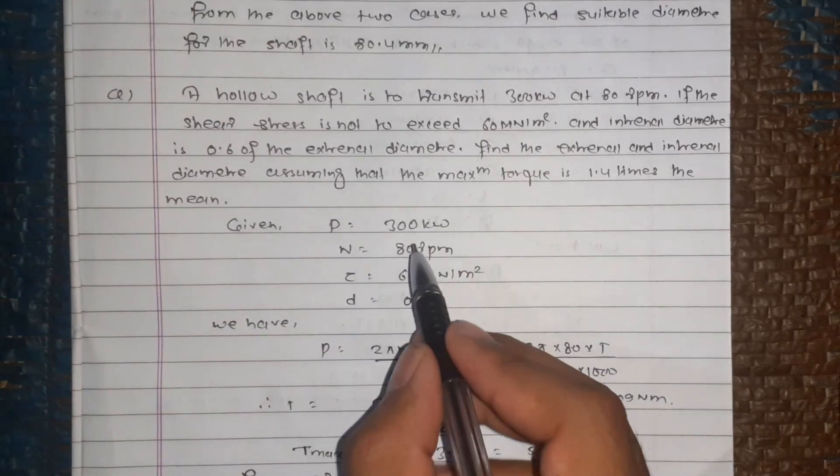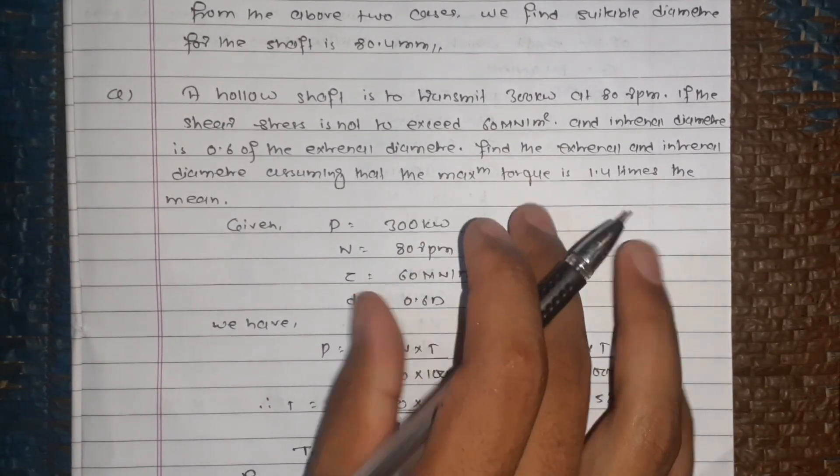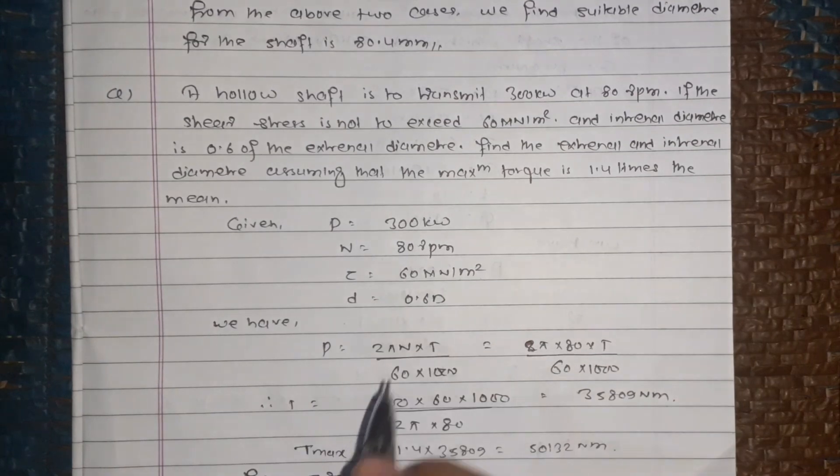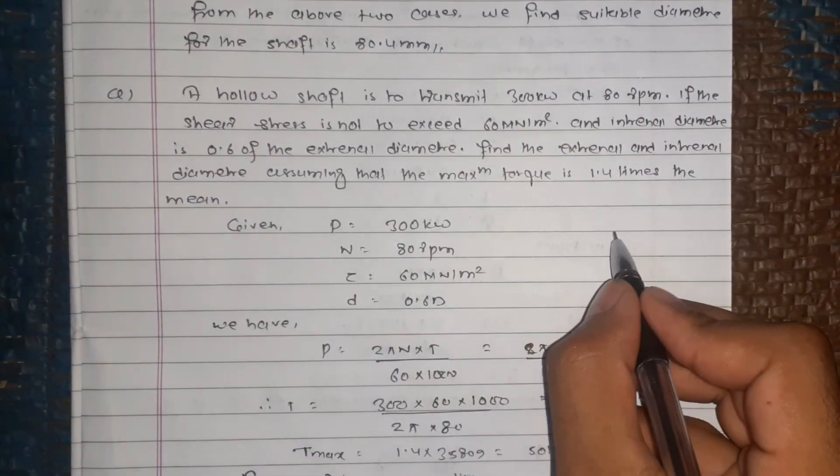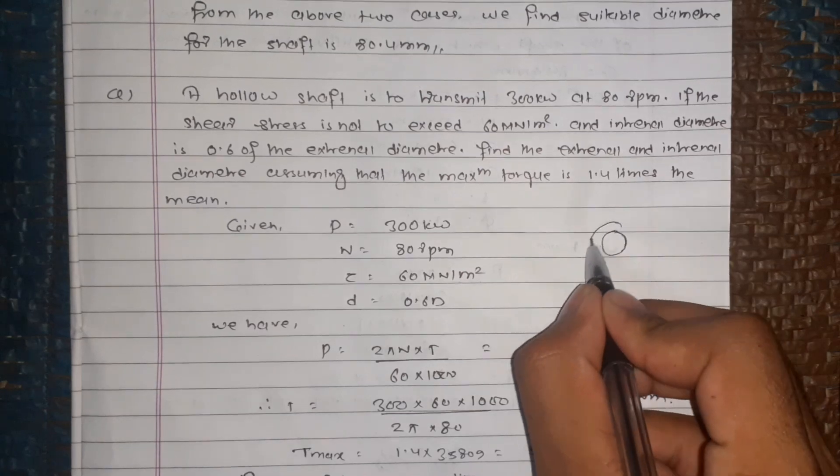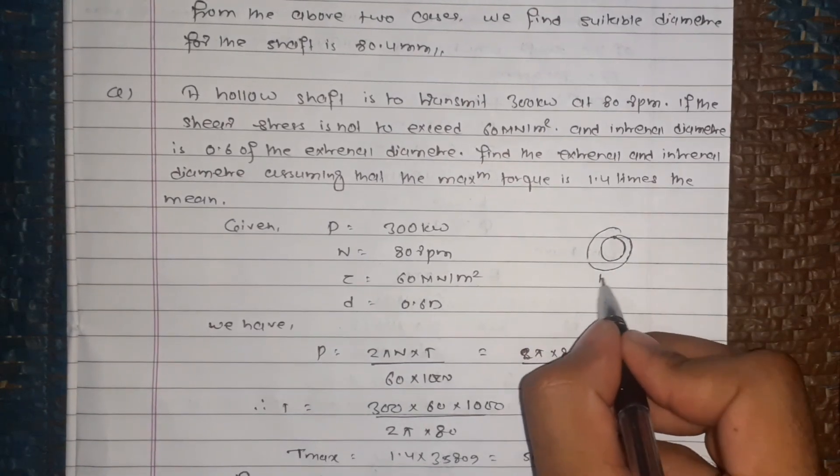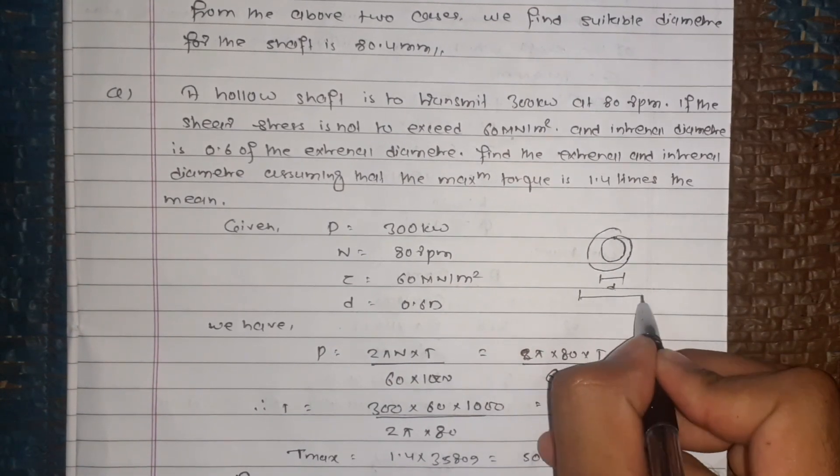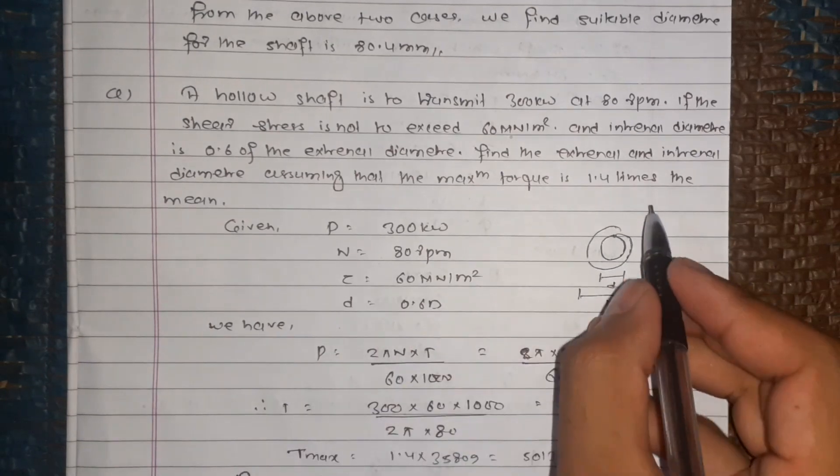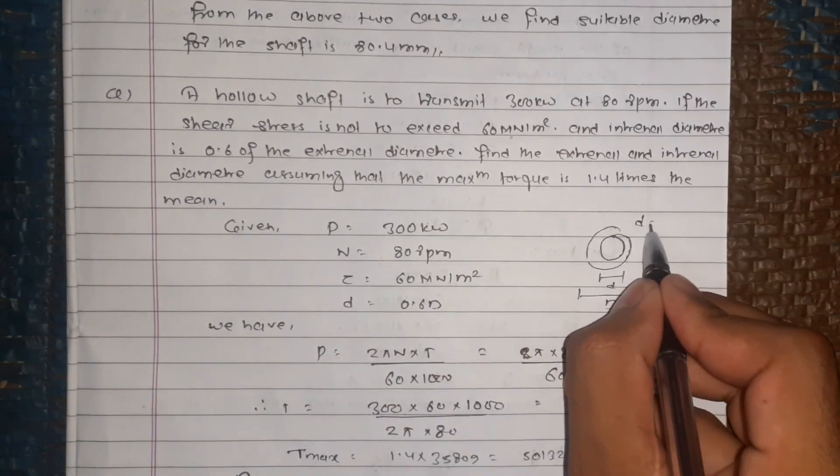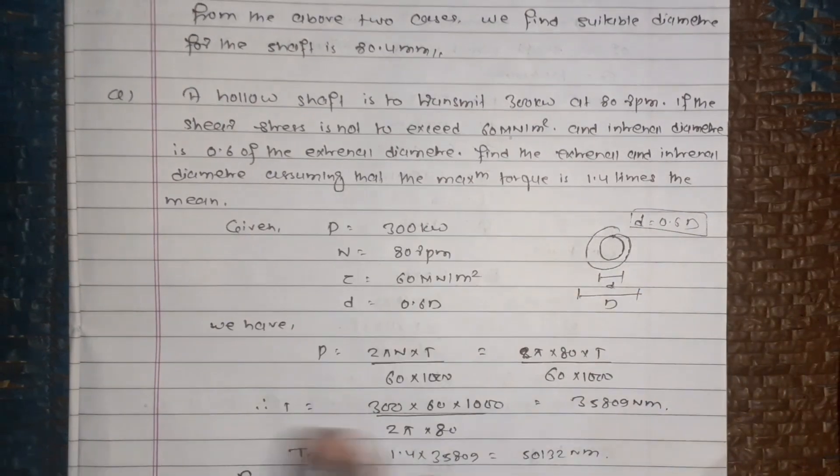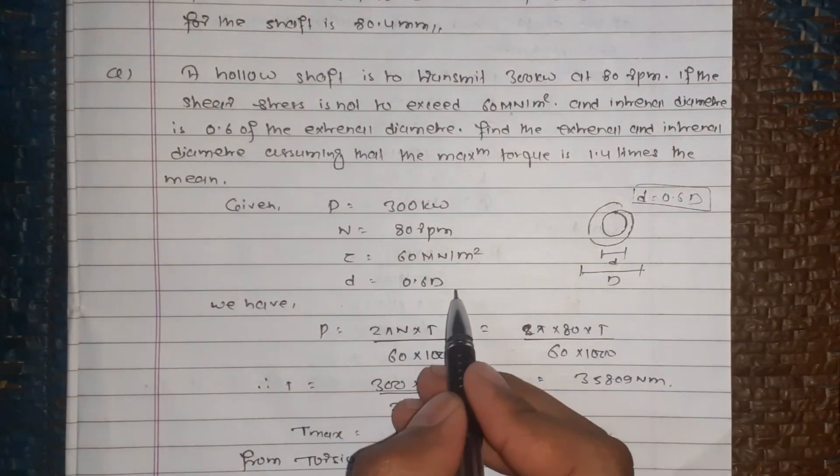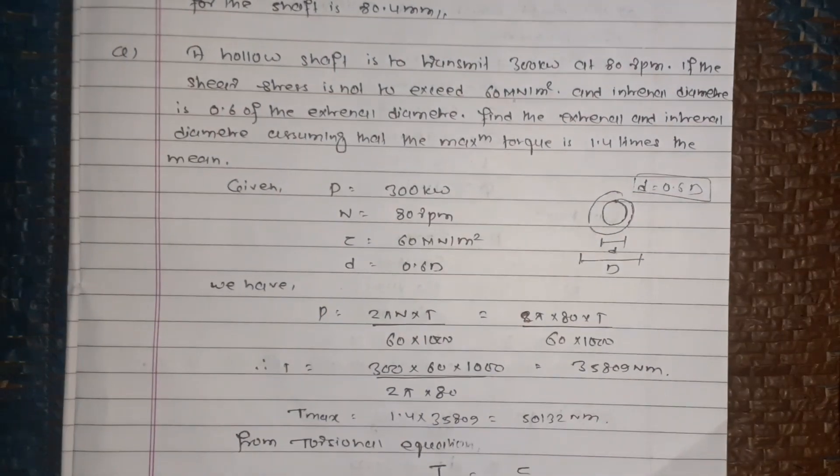Given: power is 300 kilowatt, number of revolutions is 80 RPM, tau max is 60 meganewton per meter square. We have internal diameter small d and external diameter capital D, where small d equals 0.6 times external diameter capital D.